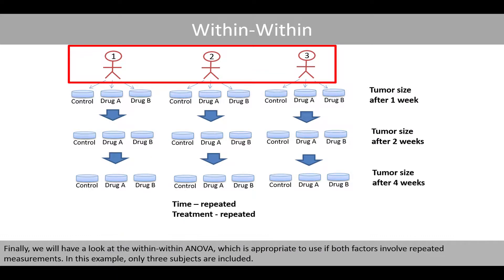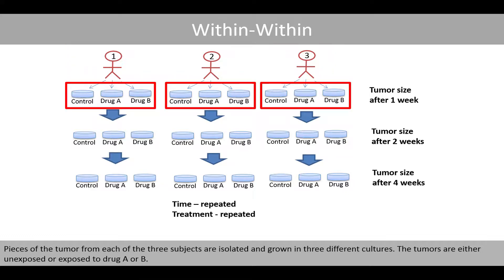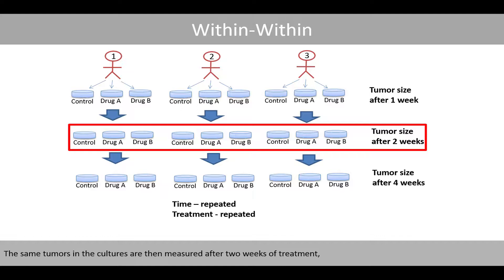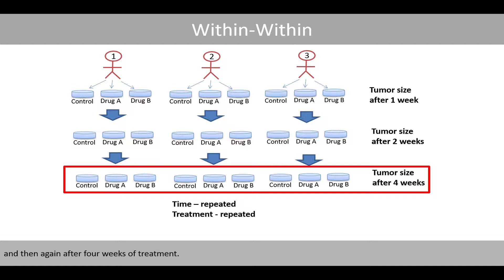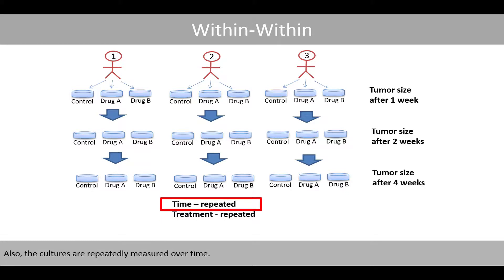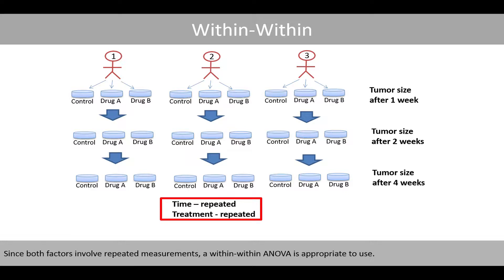Finally, we will look at the within-within ANOVA, which is appropriate if both factors involve repeated measurements. In this example, only three subjects are included. Pieces of the tumour from each subject are isolated and grown in three different cultures — either unexposed or exposed to drug A or B. The tumour size is measured after one week, then after two weeks, and then after four weeks of treatment. Since the treatment factor uses tumour material from the same individuals and the cultures are also repeatedly measured over time, both factors involve repeated measurements, so a within-within ANOVA is appropriate.